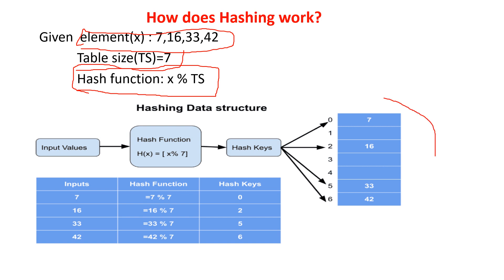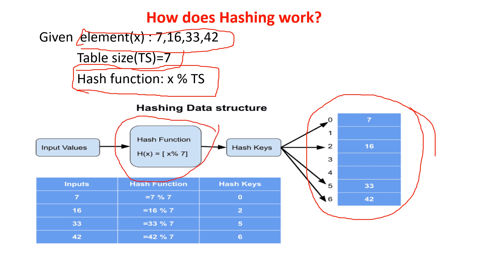The table size is the hash table — this is called the hash table. The hash function is already given, and all these key elements — 7, 16, 33, and 42 — are the key elements that I am passing as input to the hash function. Using this hash function we will get the index, and on that index basis we will store all these elements in the hash table.